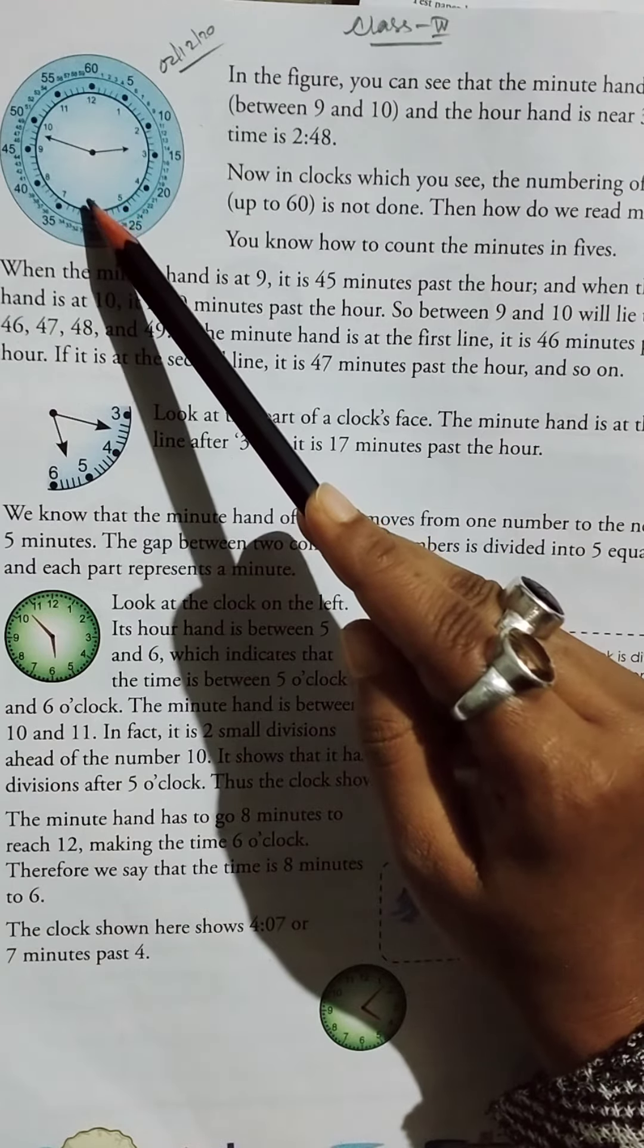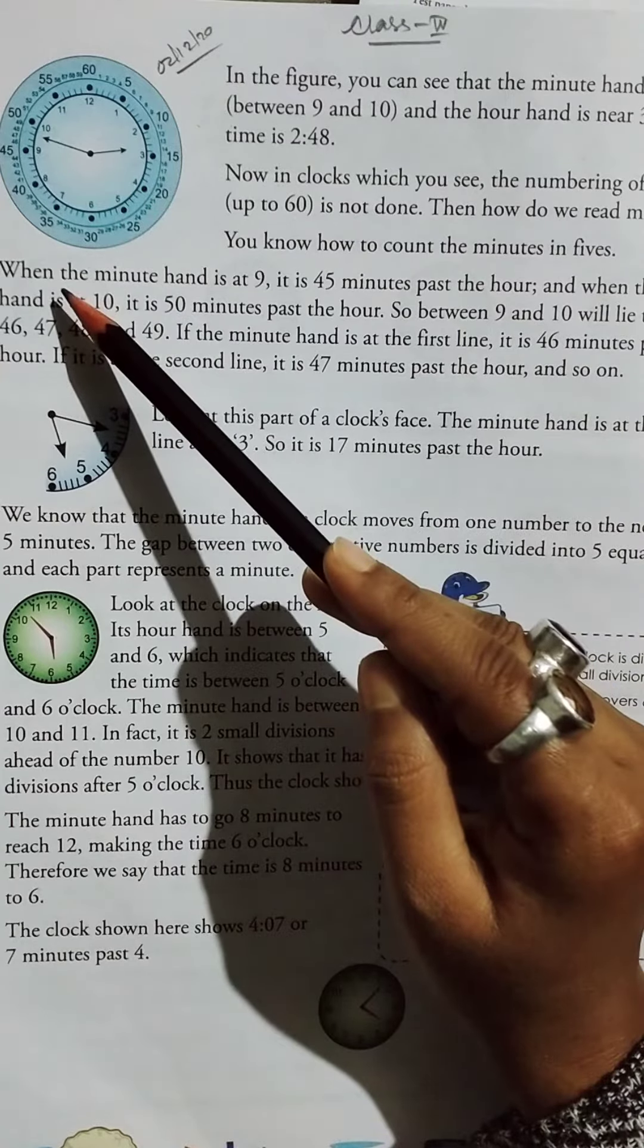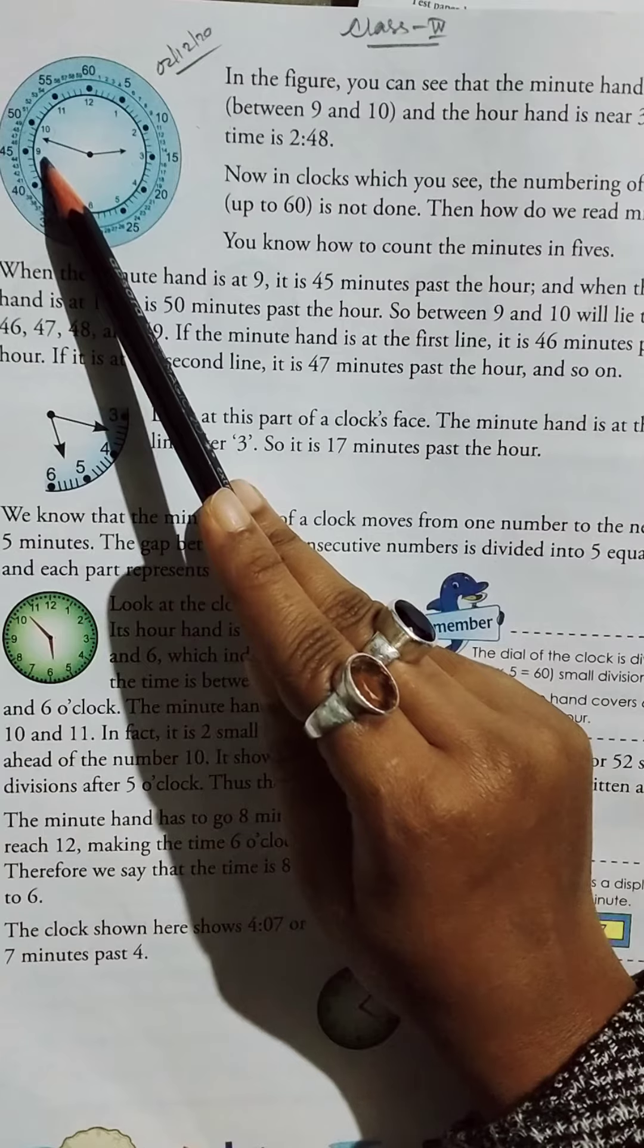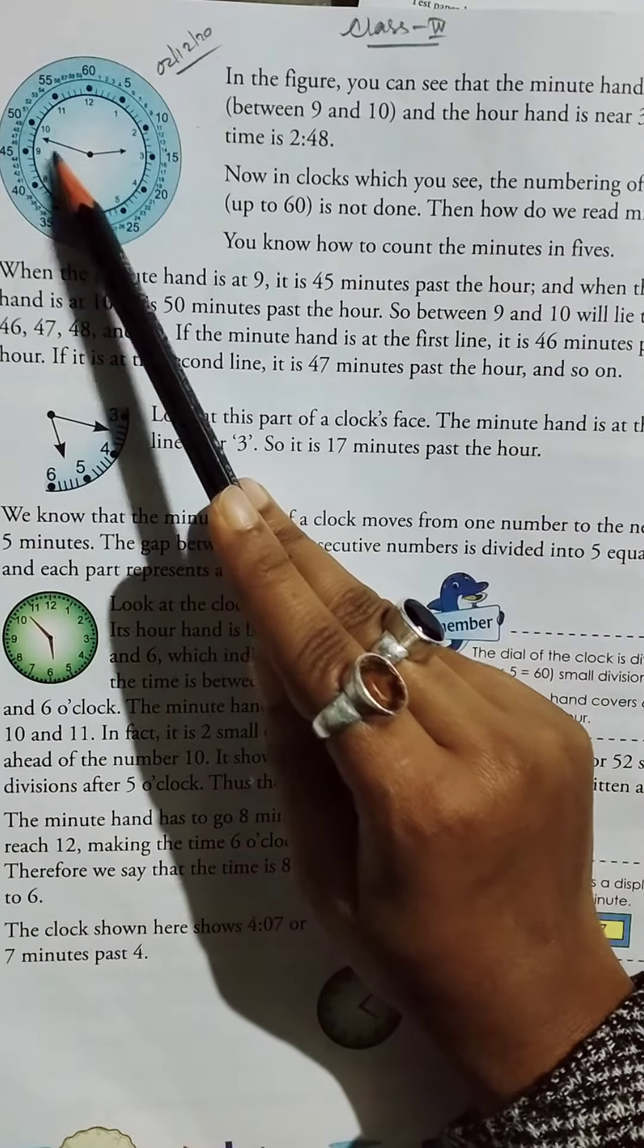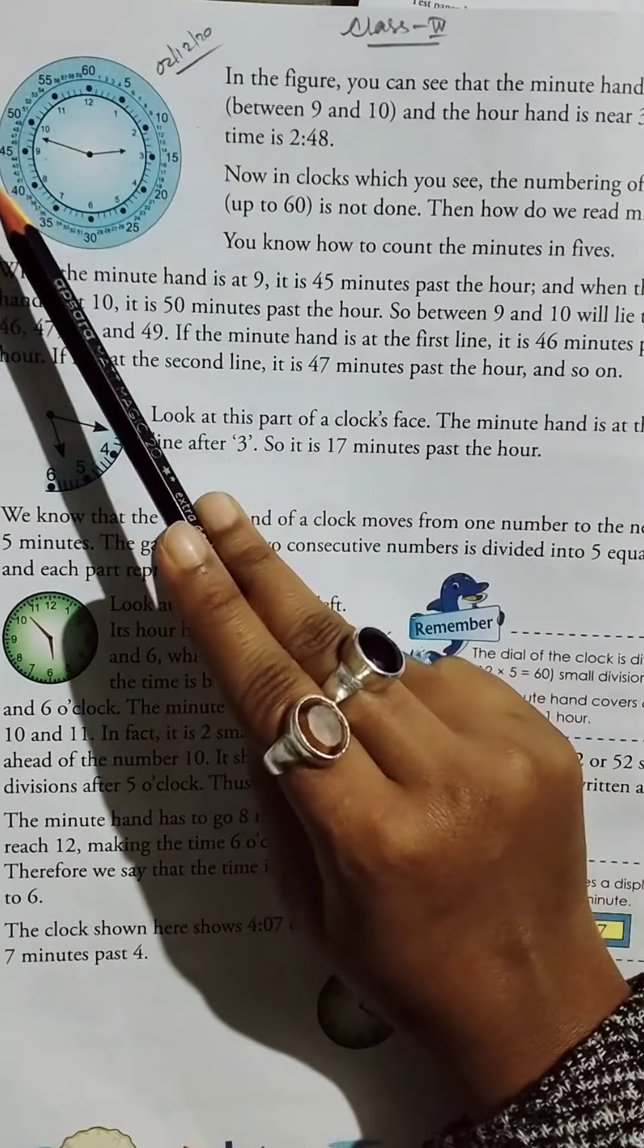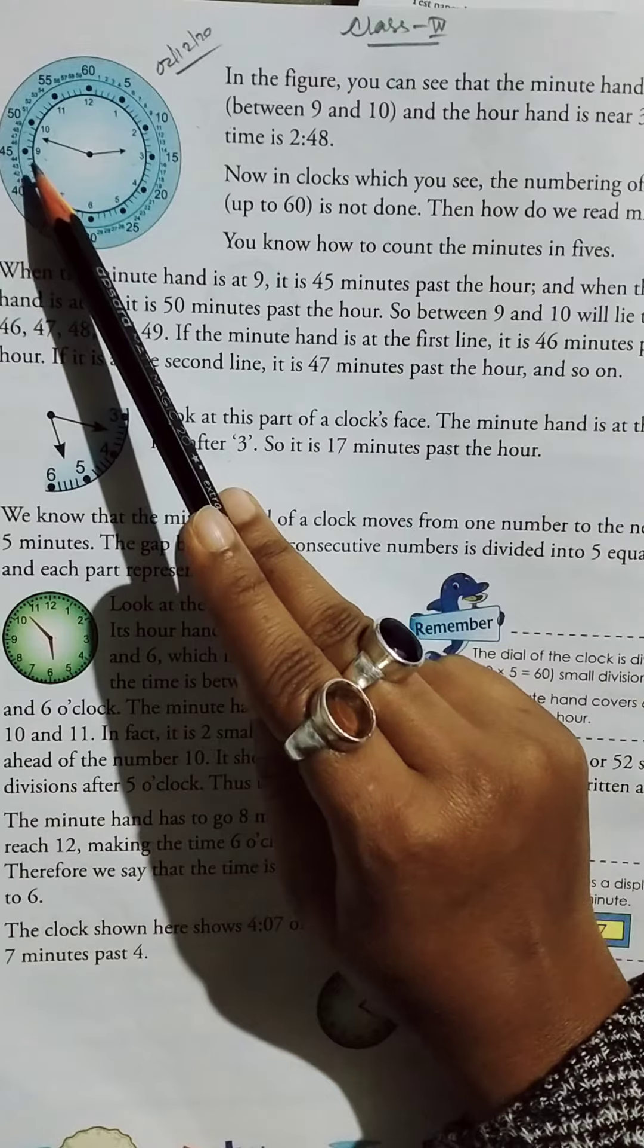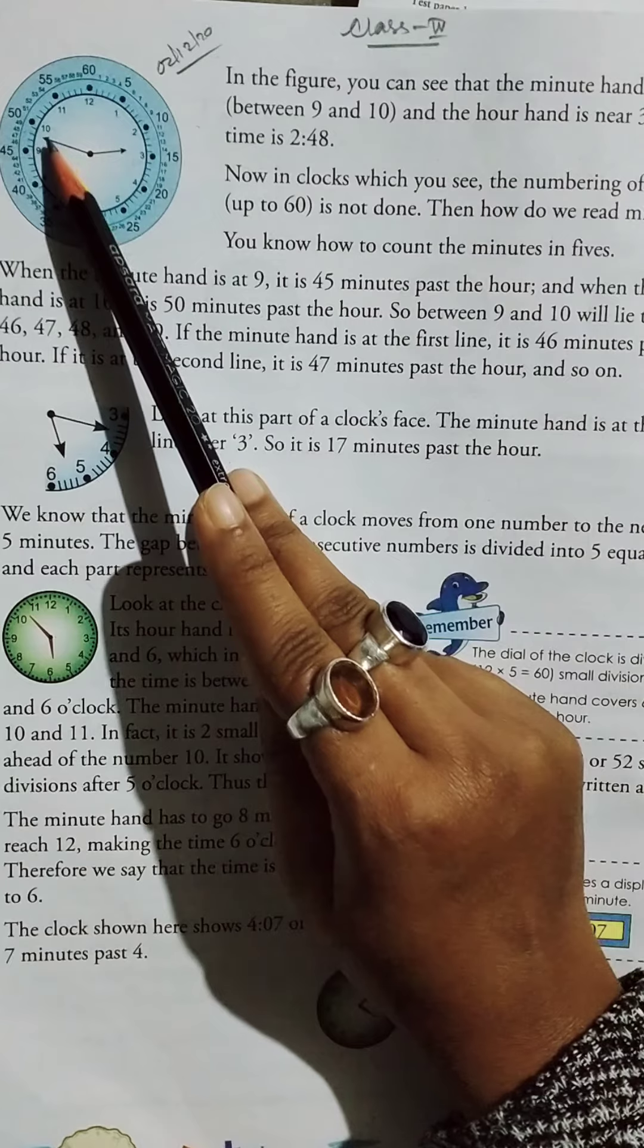Now in clocks which you see, the numbering of minutes up to 60 is not done. Then how do we read minutes? You know how to count the minutes in fives. When the minute hand is at 9, it is 45 minutes past the hour, and when the minute hand is at 10, it is 50 minutes past the hour.